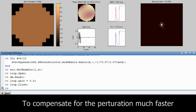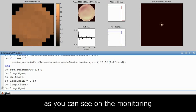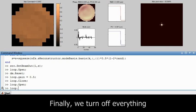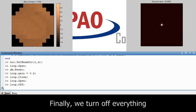As we see on the real-time display the correction is much faster. Finally we switch off all the elements of the loop.